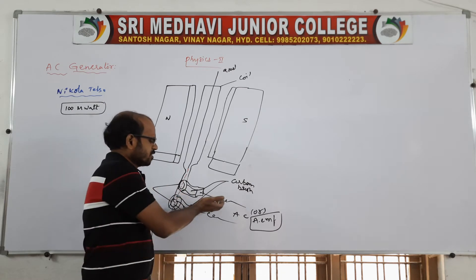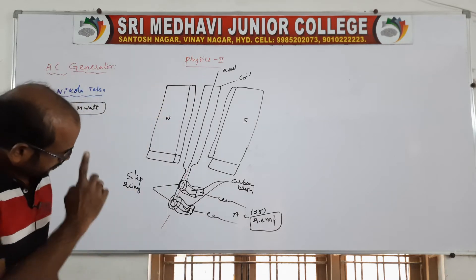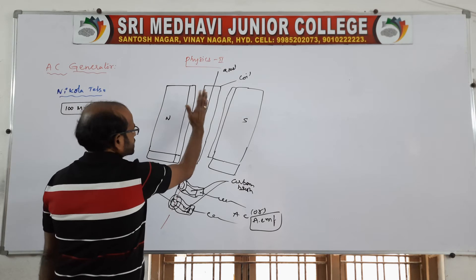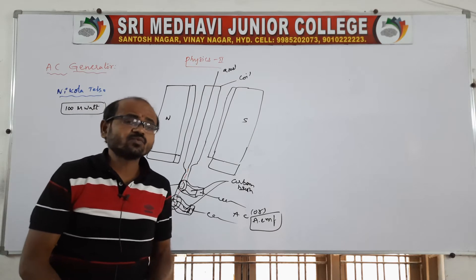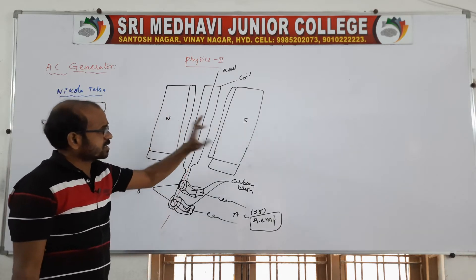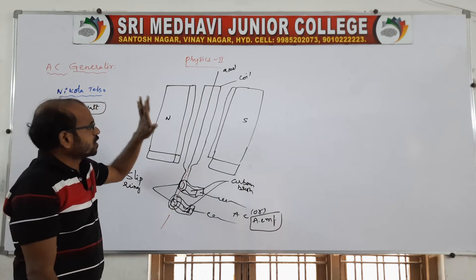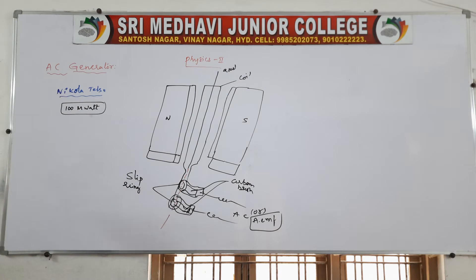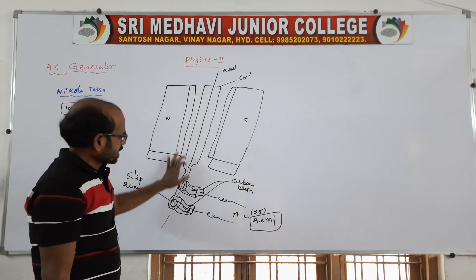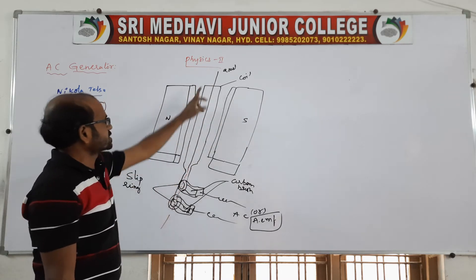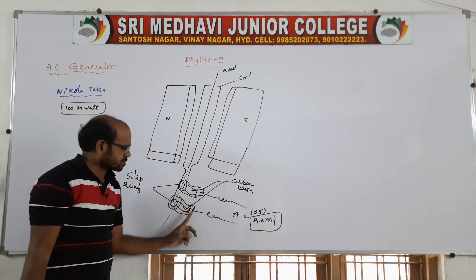So this is what we call an AC generator. The main essential parts to remember are: field magnets, a rectangular coil also called the armature, the axle, two slip rings, and carbon brushes.